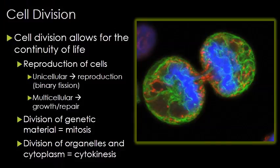If you're a unicellular organism, cell division is going to be how you reproduce — something simple in bacteria like binary fission, up to unicellular eukaryotes using mitosis. If you are a multicellular organism, dividing cells is going to be for growth and repair, fixing damage. So you do need to be aware there are two different things going on here.